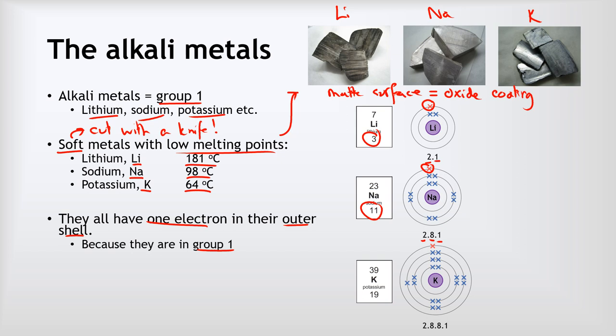And finally we've got potassium. Potassium down another group, so its atomic number is now 19, so it's got 19 electrons: two in the first shell, eight in the second shell, eight in the third shell, and again that one on its own in the outer shell.